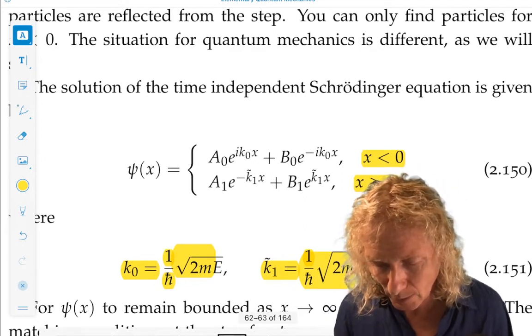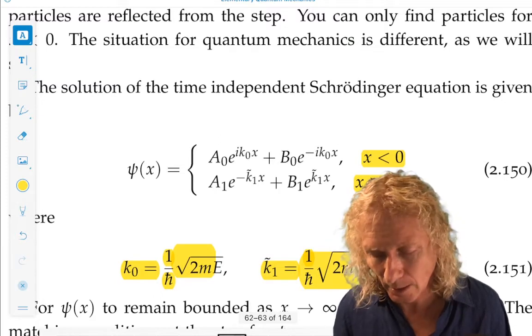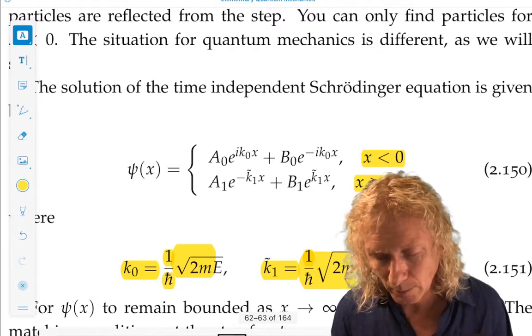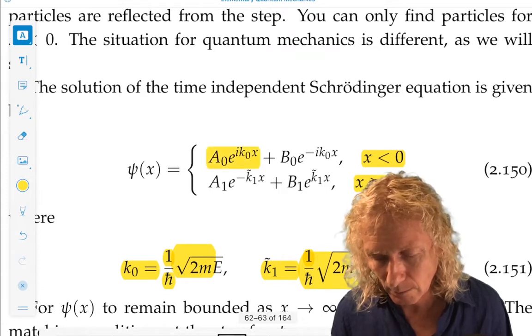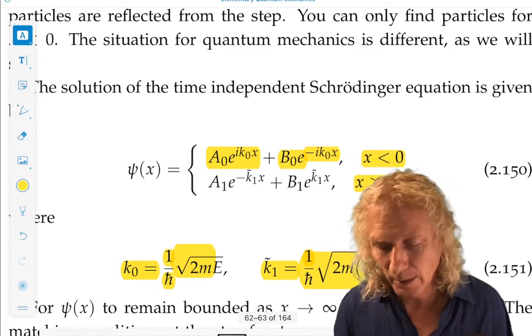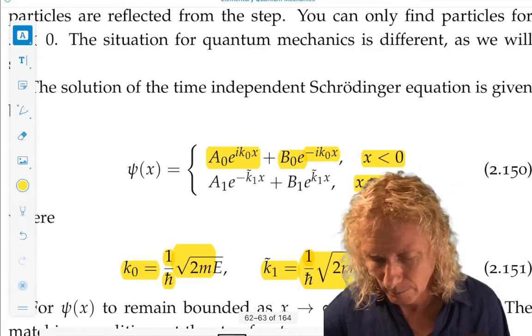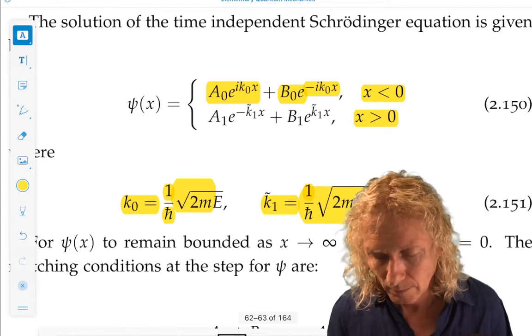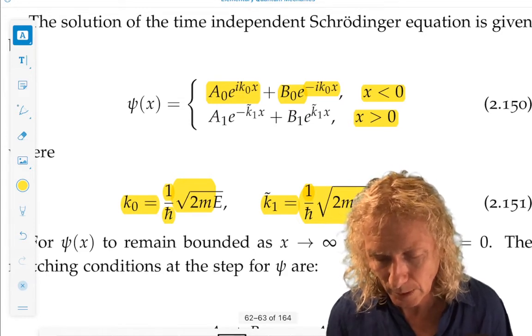a-naught e to the ik-naught x plus b-naught e to the minus ik-naught x corresponding to a particle moving from left to right and the possibility of moving from right to left. So to have reflected particle.